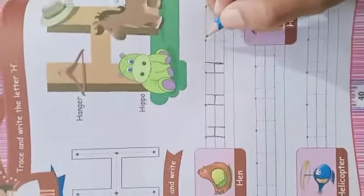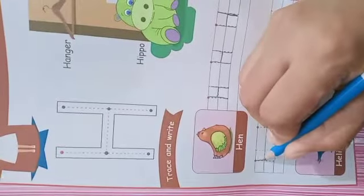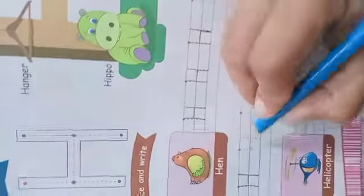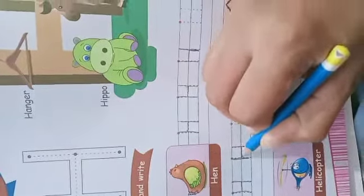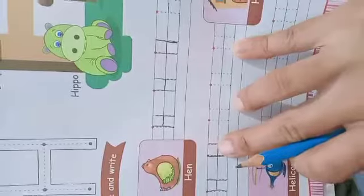You have to trace it like this. Here is standing line, standing line, H. Again, standing line, standing line and one sleeping line. There are two standing lines with one sleeping line in the middle.